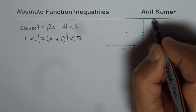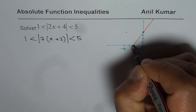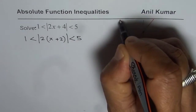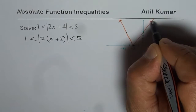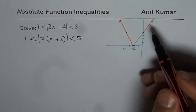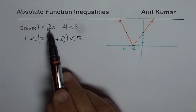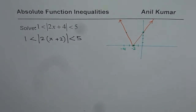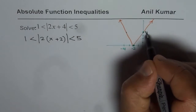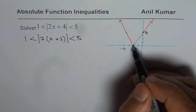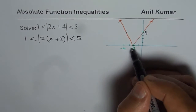Let me sketch this. We have the absolute value function shaped like a V. You can see this line is 2x plus 4 — the y-intercept is 4 and the slope is 2. On the other side, it is the negative of 2x plus 4; we just flipped this.